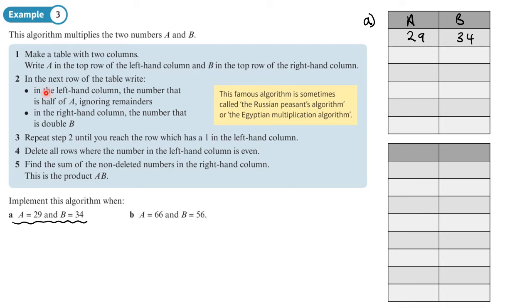Following the algorithm: half of 29 ignoring any remainder is 14, and double 34 is 68. We keep halving the left column and doubling the right: 14 halves to 7, 68 doubles to 136. Then 7 halves to 3 (ignoring remainder), 136 doubles to 272.